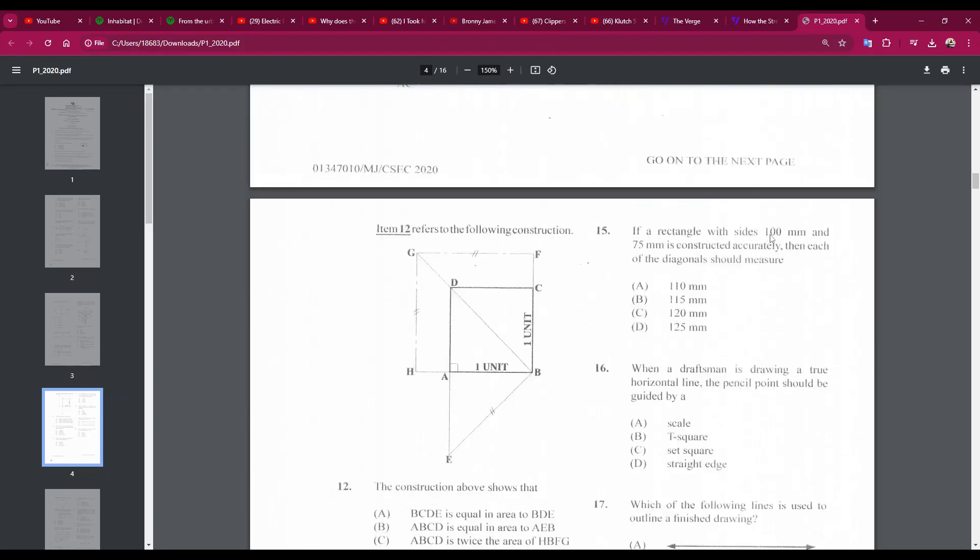If a rectangle with sides 100 millimeters and 75 millimeters is constructed accurately, then each of the diagonals should measure... The answer is D, 125. There's a formula for this. It says that D, which is the diagonal, is equal to the square root of side A squared plus side B squared. It's very mathematical. But the answer is D, 125.